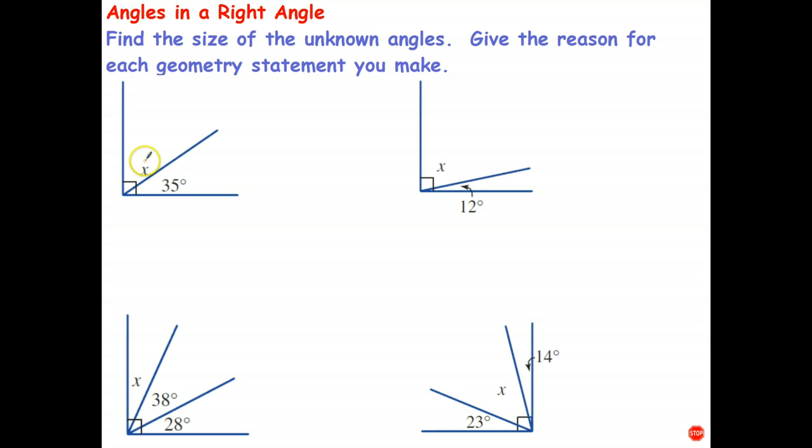So what I could say here is that angle plus that angle, or in other words, x plus 35, we don't write the units in algebra, adds to 90 degrees or equals 90 degrees. And then to solve that equation, we just undo adding 35, which is subtracting 35. And we get x equals 90 take 35, which is 55, and then we do put the units on.